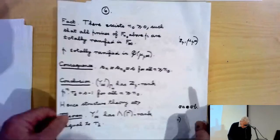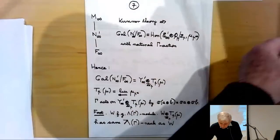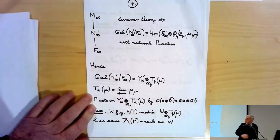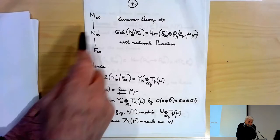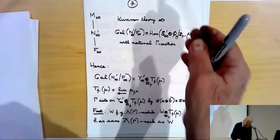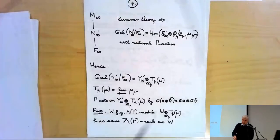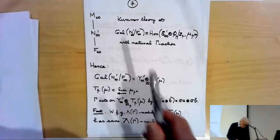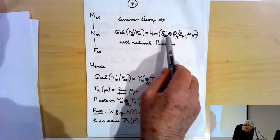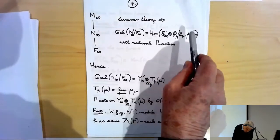This is not quite the theorem we want because we're actually interested in Kummer theory. We want the field N∞' obtained by adjoining all p-power roots of elements of E∞'. Note that E∞' ⊗ (Q_p/Z_p) is the same as curly E∞' ⊗ (Q_p/Z_p) since we're just dividing out a divisible group. By Kummer theory, the Galois group of N∞' over F∞ is the homomorphisms from E∞' (or curly E∞') ⊗ (Q_p/Z_p) into μ_{p^∞}.